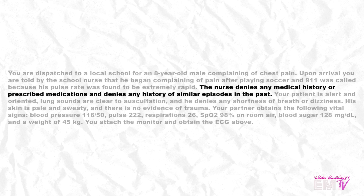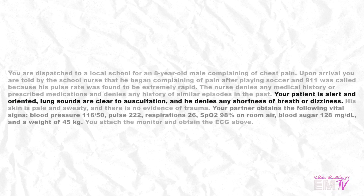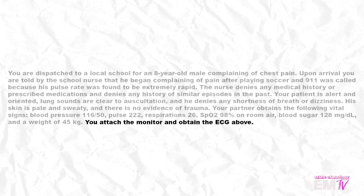The nurse denies any medical history or prescribed medications, and denies any history of similar episodes in the past. Your patient is alert and oriented, lung sounds are clear to auscultation, and he denies any shortness of breath or dizziness. Your partner obtains the following vital signs: blood pressure 116 over 50, pulse 222, respirations 26, SPO2 98% on room air, blood sugar 128, and a weight of 45 kilograms. You attach the monitor and obtain the ECG above.